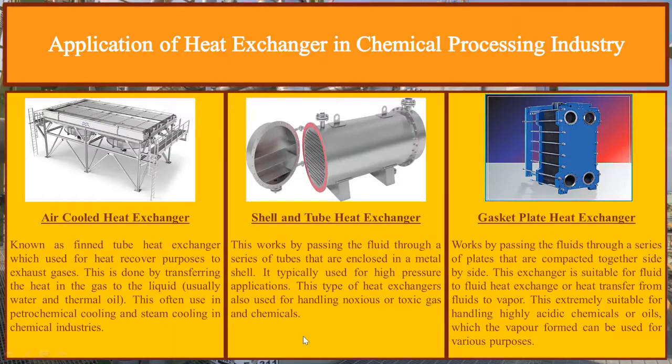The other one is the shell and tube heat exchanger, where it works by passing the fluid through a series of tubes that are enclosed in a metal shell. This type of heat exchanger is used for handling toxic gases and chemicals.